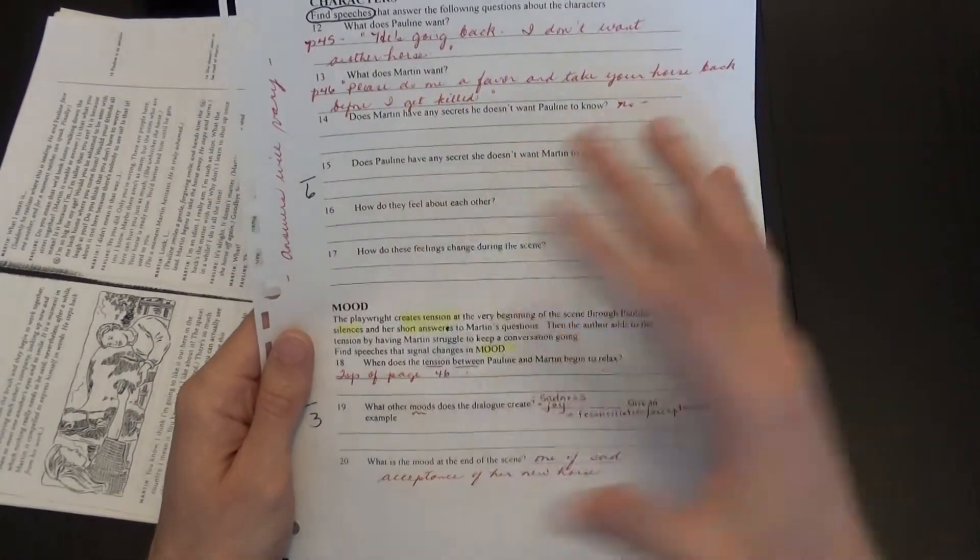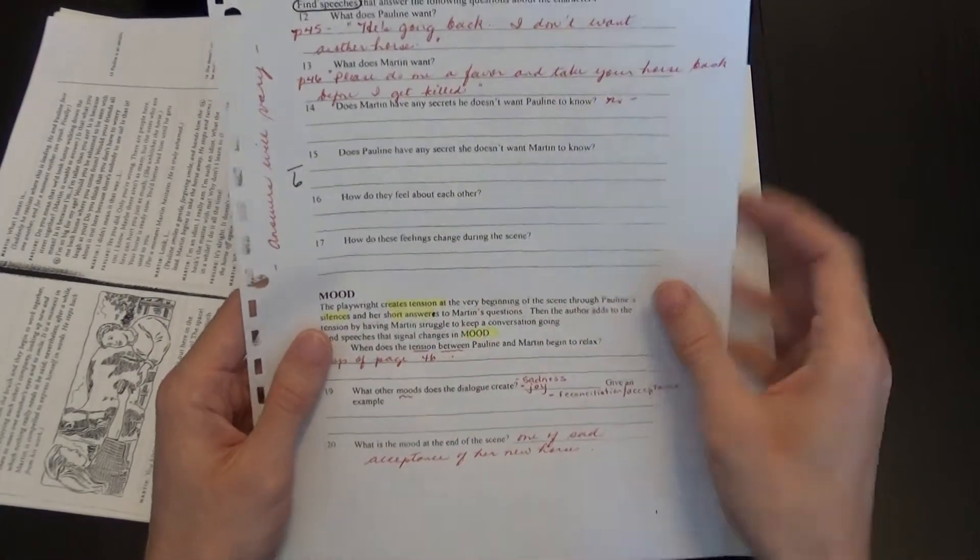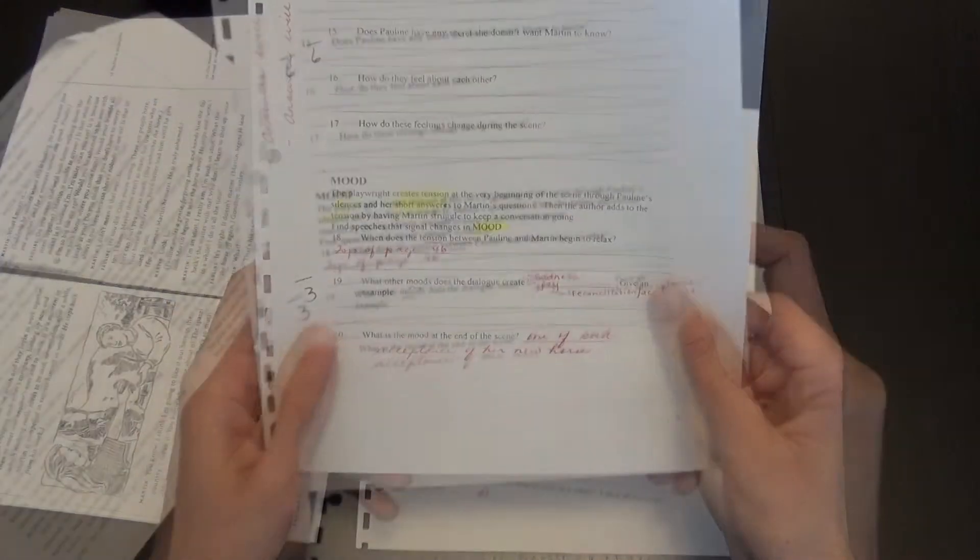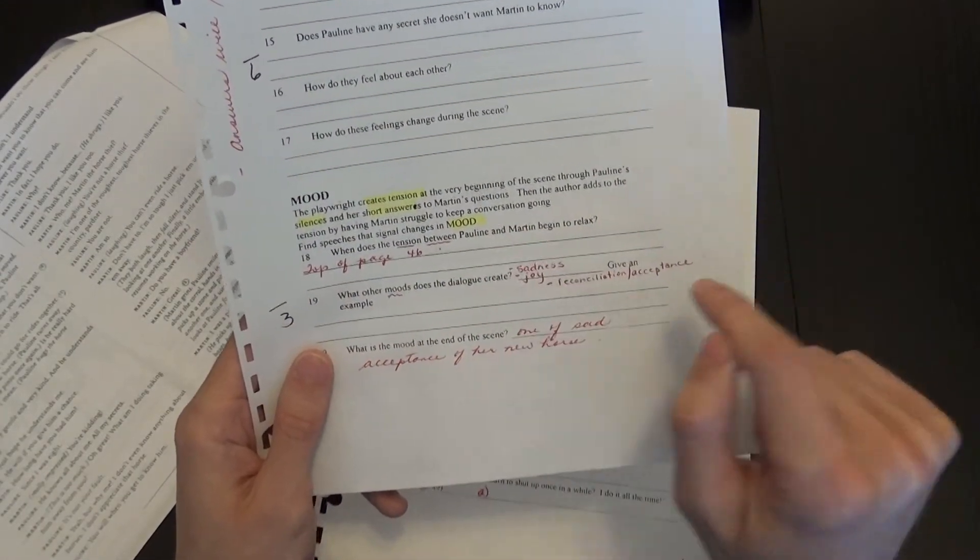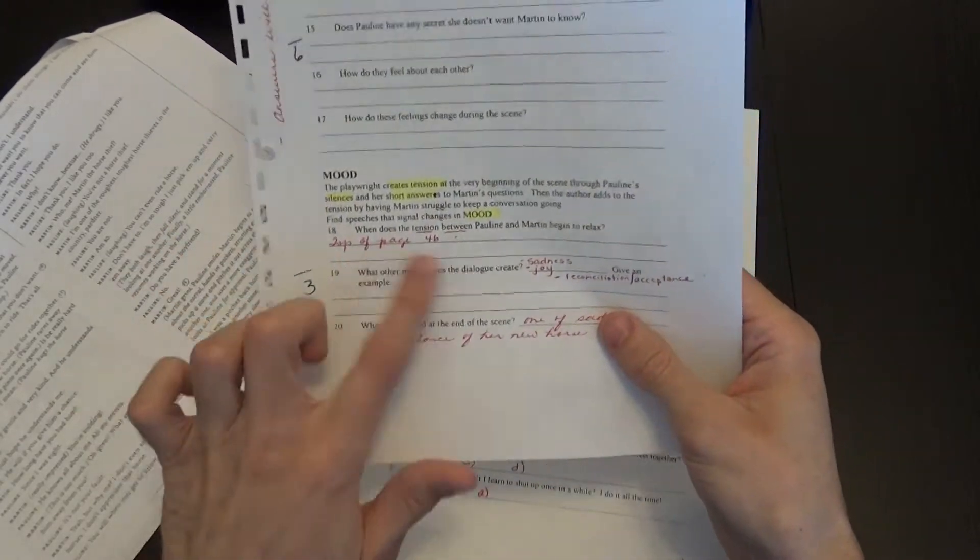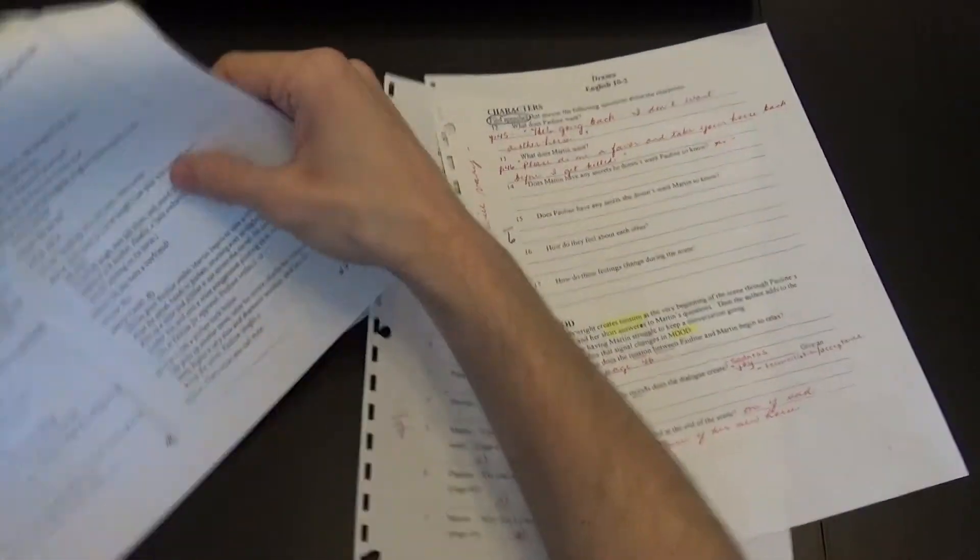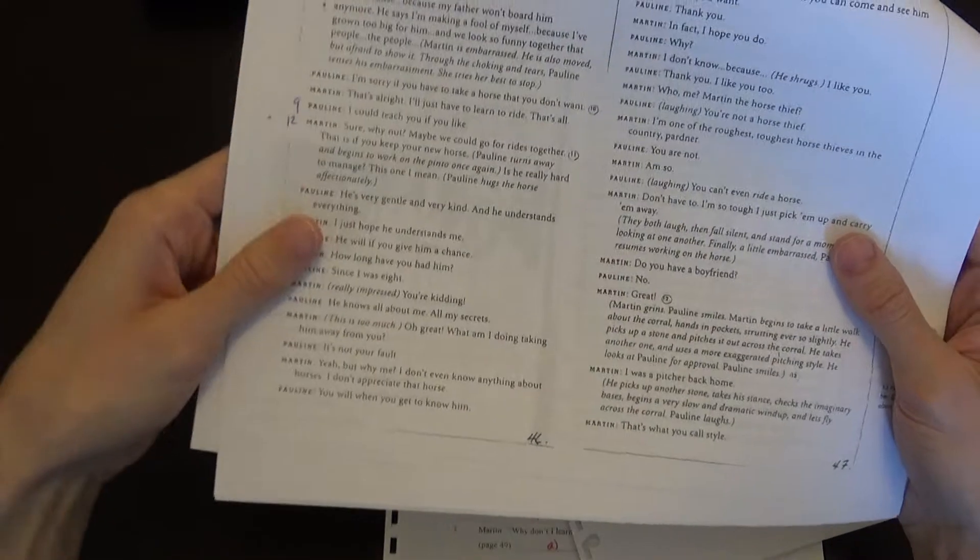And for the next questions, there are many possible answers. If you're not sure if you have the right answer, you can always send me an email. And here for question 18, when does the tension between Pauline and Martin begin to relax? It's at the middle of page 46. So up to here, page 46, they started to be nicer to each other.